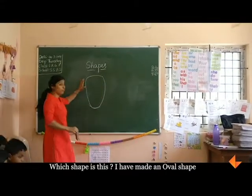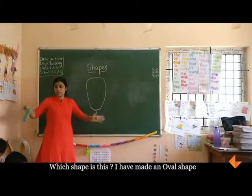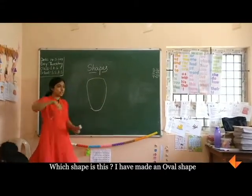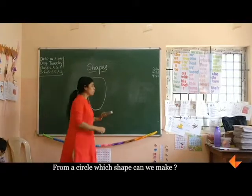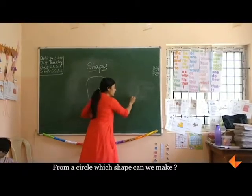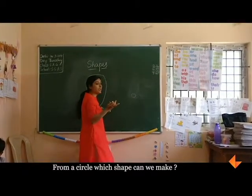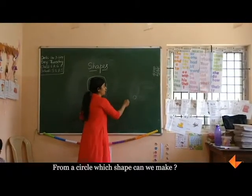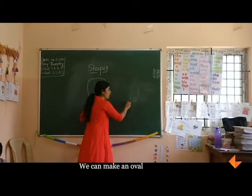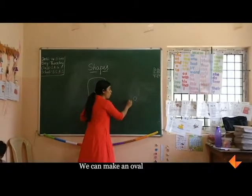So from a big circle, from a circle, which shape can we make? You can make an oval.